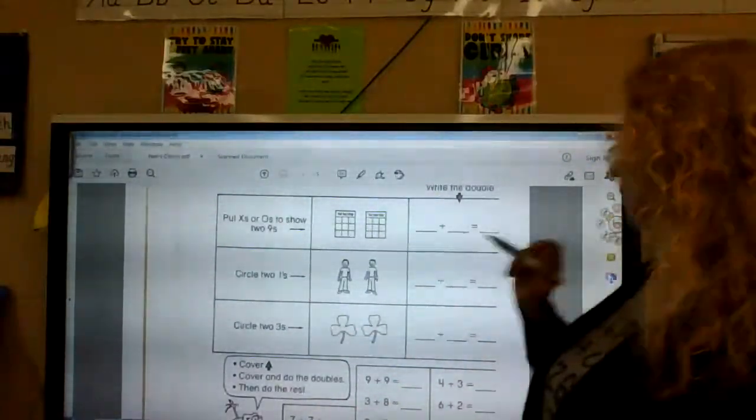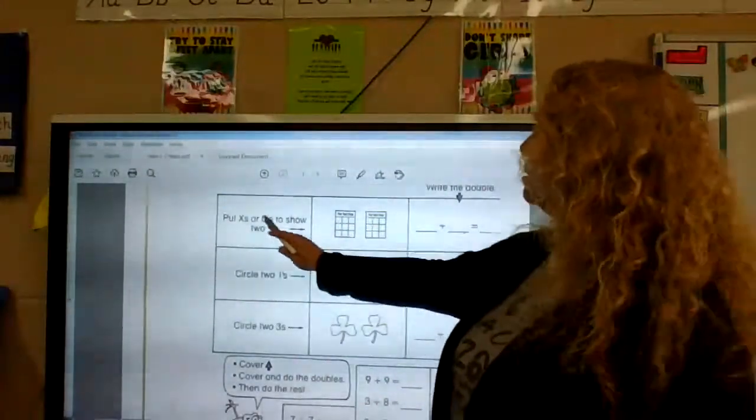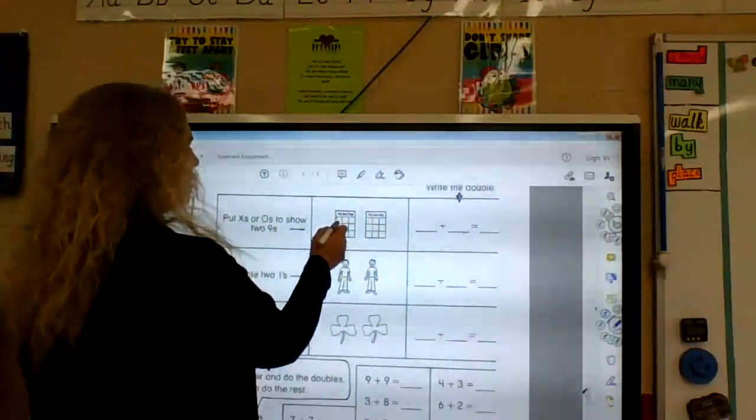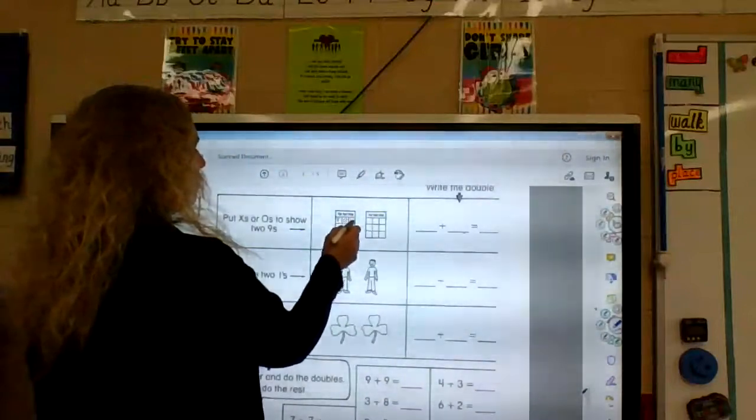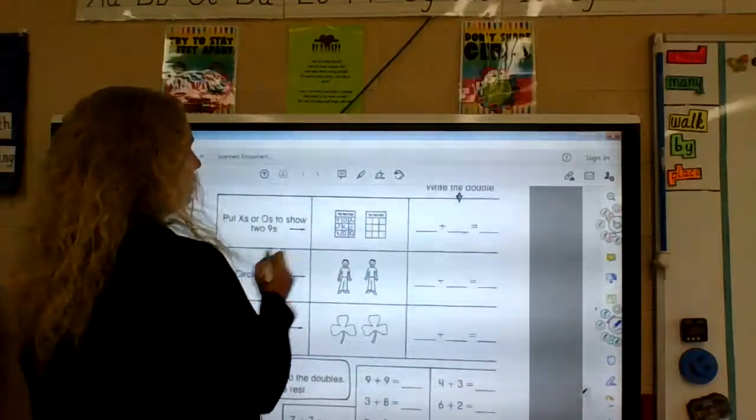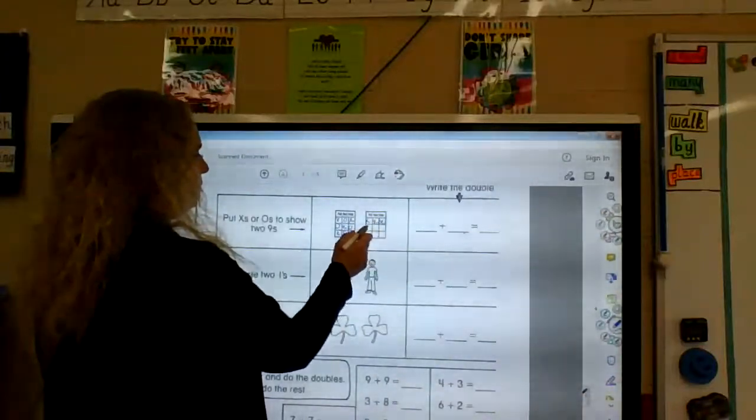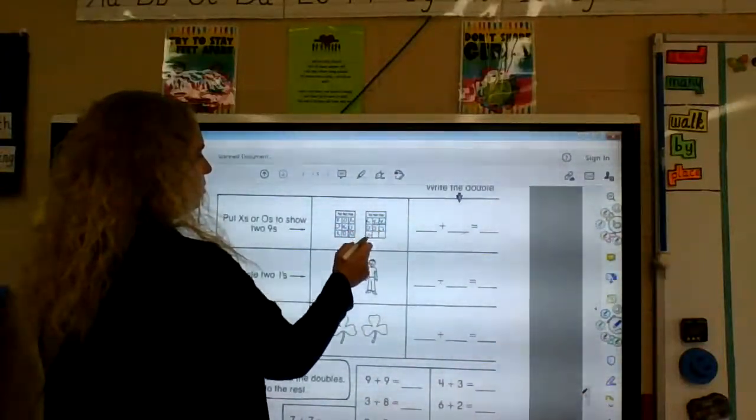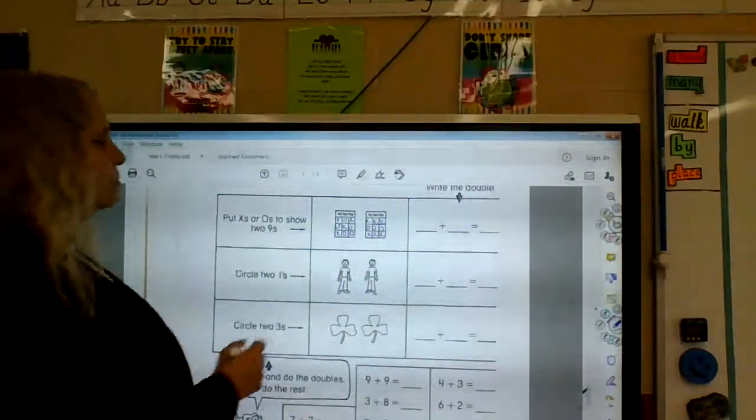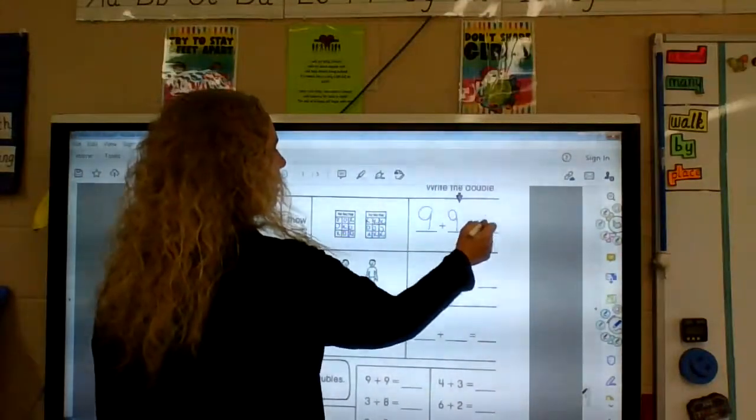Okay. So, now, here's our pictures again that goes with our doubles. Remember, this is the nines, right? It says put X's or O's to show two nines. So, inside the boxes, you can just do some X's and O's. Four, five, six, seven, eight, nine. One, two, three. And so, that's nine plus nine equals 18.